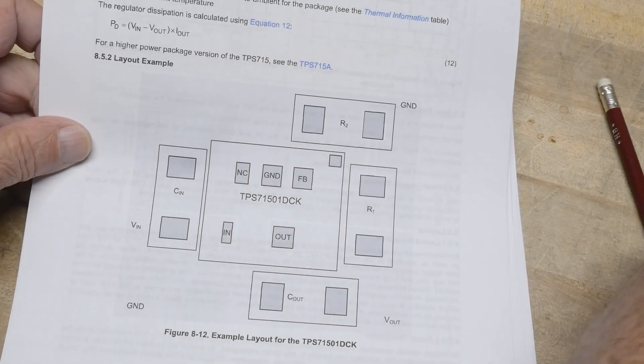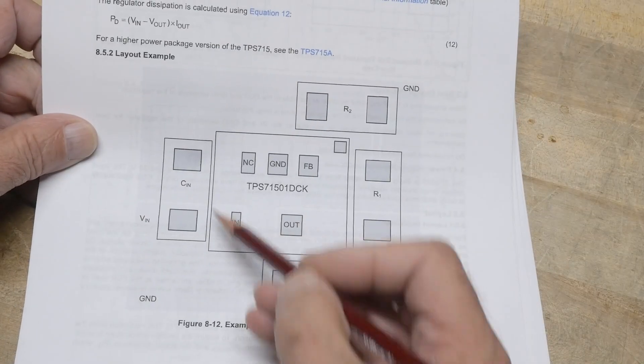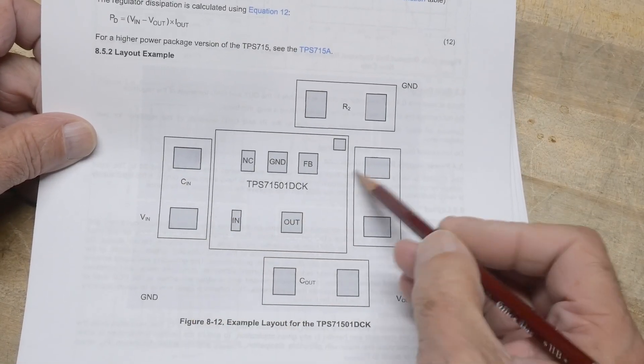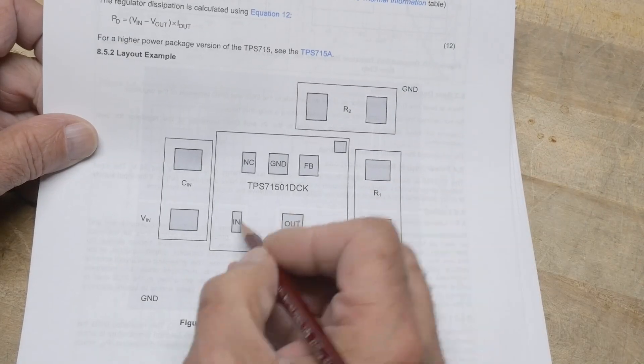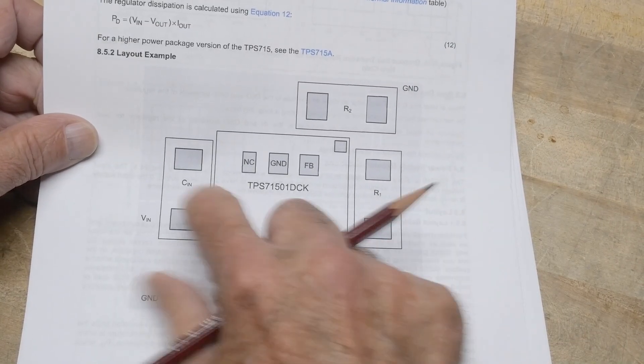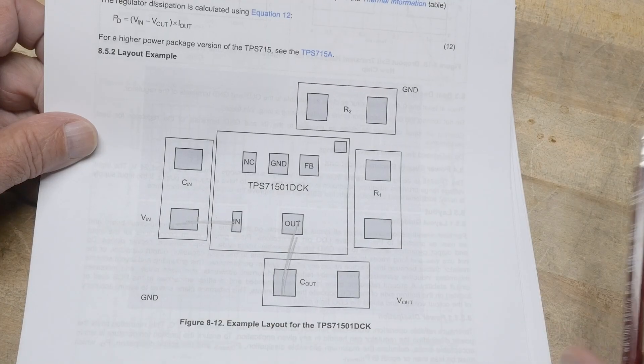So you know, being close is good, right? So here's the input and the output. So this is the capacitor for the in. Here's the capacitor for the out. So these are connected and these are connected. So very close. Yeah. Pretty cool.